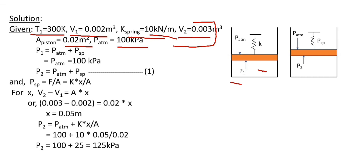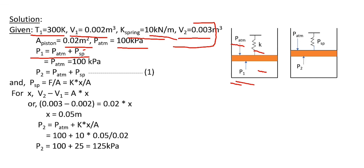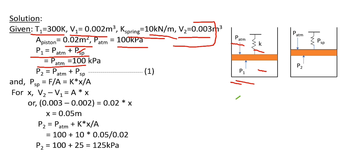P1 is the initial pressure of air inside the cylinder. This pressure P1 is balanced by atmospheric pressure and spring pressure, so P1 equals atmospheric pressure plus spring pressure. Since according to the question the spring is initially not exerting any pressure or force on the piston, spring pressure equals zero, and therefore P1 equals atmospheric pressure.